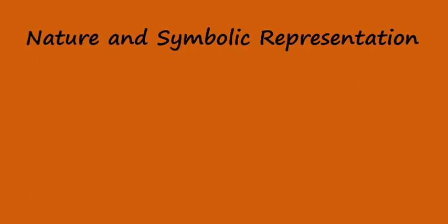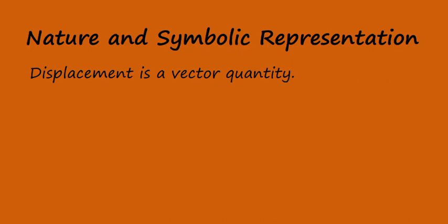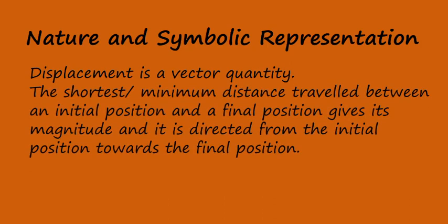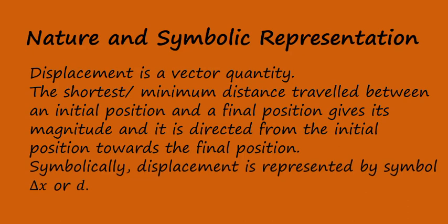Nature and Symbolic Representation. Displacement is a vector quantity. The shortest or minimum distance travelled between an initial position and a final position gives its magnitude, and it is directed from the initial position towards the final position. Symbolically, displacement is represented by the symbol delta x or d. So, delta x equals xf minus xi.